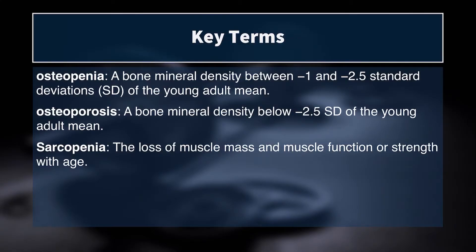Some key terms we have to know when talking about older populations: the first two are osteopenia and osteoporosis. Osteopenia is a decrease in bone mineral density between one and two and a half standard deviations below the mean. That's still a dramatic decrease in bone mineral density, but it's not quite as severe as osteoporosis, which is anything below two and a half standard deviations below the mean — some serious decreases in bone mineral density.